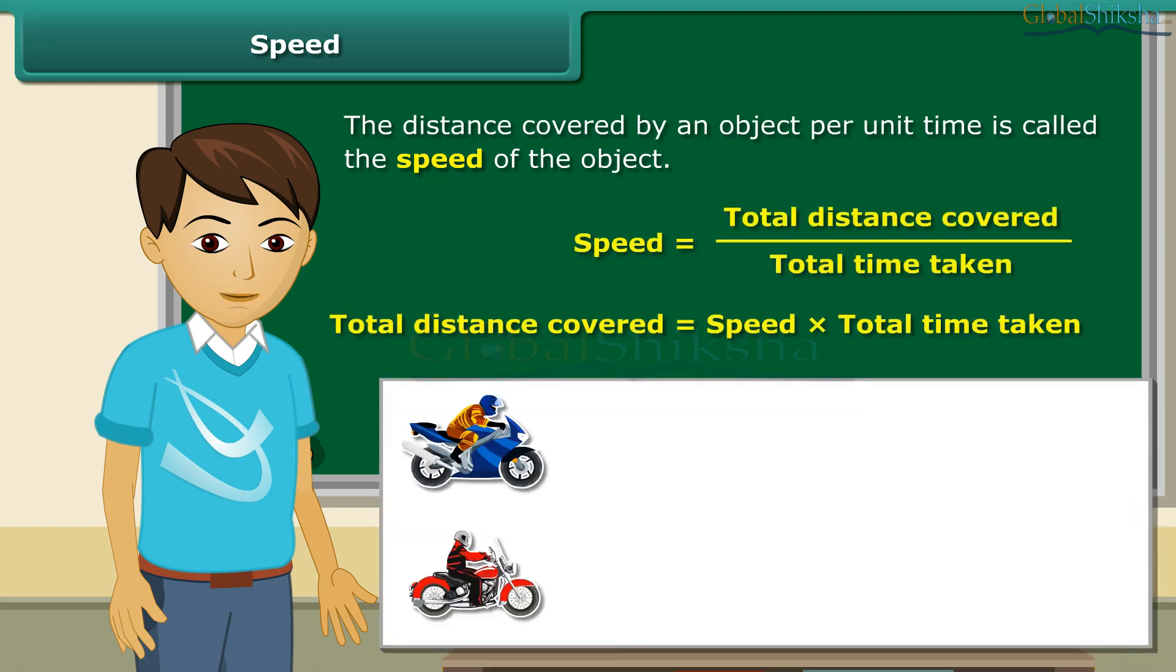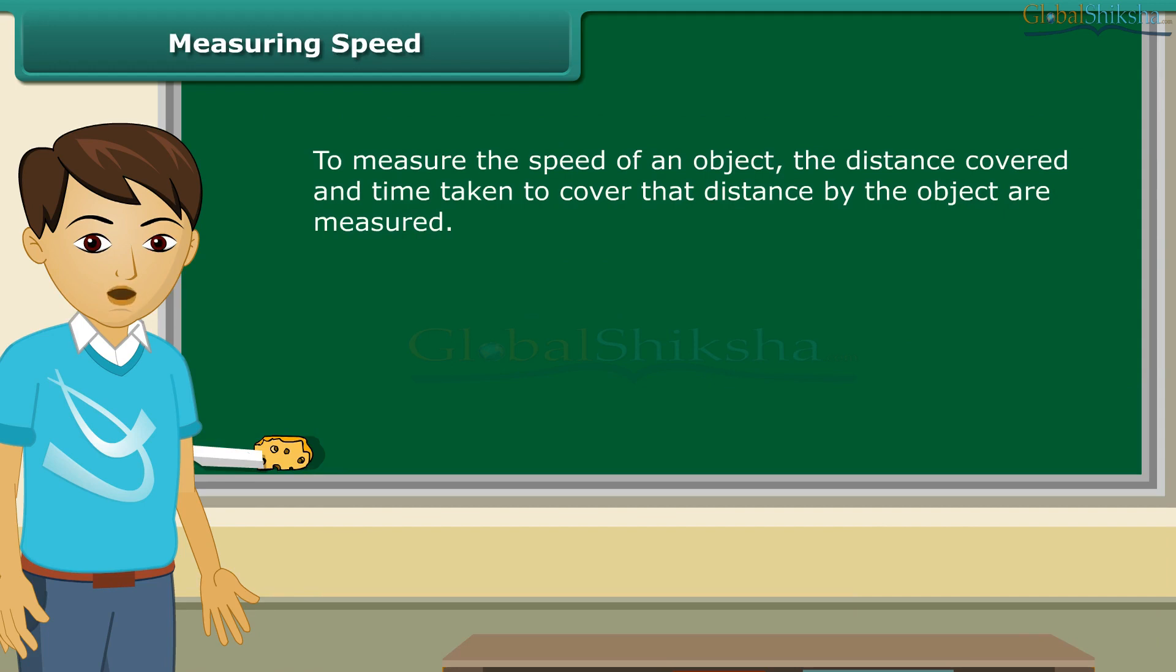Suppose your brother claims that his motorbike is faster than his friend's. His friend denies. You know that your brother's motorbike covers a distance of 60 km in an hour, whereas his friend's bike covers 40 km in one hour. Let us now check the claims of your brother and his friend. The speed of your brother's bike is 60 km per hour and that of his friend's bike is 40 km per hour. Your brother's bike is certainly faster than his friend's because its speed is greater.